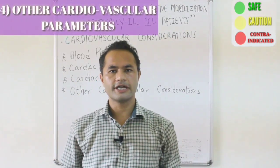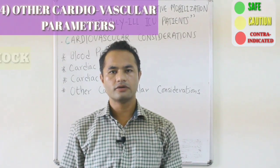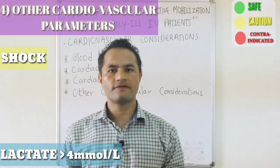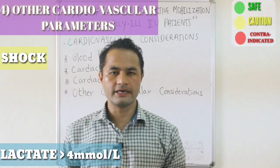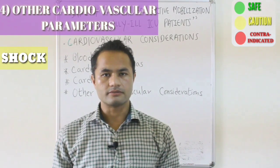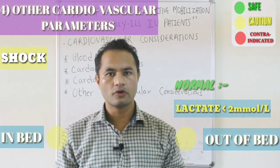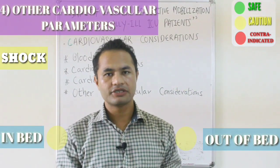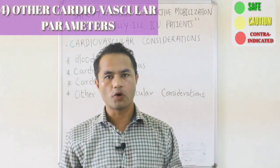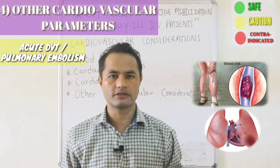The fourth cardiovascular consideration includes other cardiovascular parameters. Shock from any cause with a lactate concentration above 4 mmol/L is a key concern — lactate is a by-product of anaerobic metabolism, with normal levels below 2 mmol/L and elevated levels above 2 in critically ill patients. Next is the presence of known or suspected acute deep vein thrombosis (DVT) or pulmonary embolism (PE).